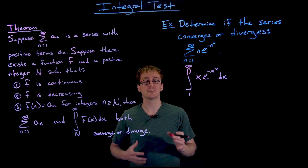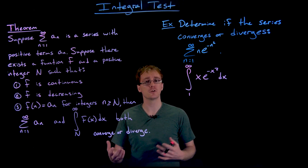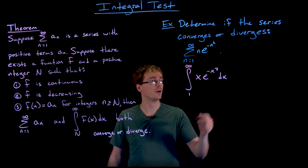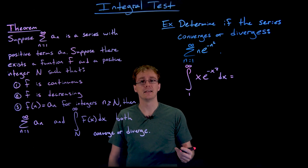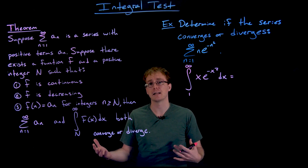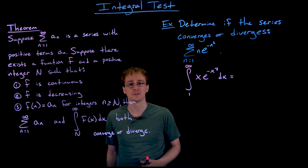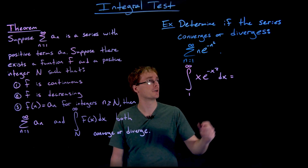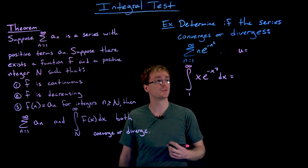The integral test is a really powerful and useful test for convergence or divergence. The only real downside is that we have to know how to compute the required integral, and so that means we might have to remember things like integration by parts or use substitution or even crazier strategies like partial fraction decomposition or trig substitution. So for this improper integral, we can actually compute it just by using a simple u-substitution.